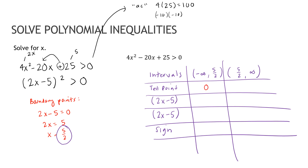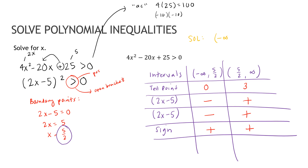I'll use test point 0 for the first interval: 2 times 0 minus 5 is negative, and since the factor appears twice, negative times negative is positive. For test point 3 in the second interval: 2 times 3 minus 5 is positive, and positive times positive is positive. I'm looking for values greater than 0, meaning positive. Both intervals give positive, so the solution is all real numbers except x = 5/2. Since it's strictly greater than (not or equal to), I use open brackets: negative infinity to 5/2 union 5/2 to infinity.